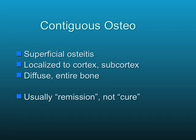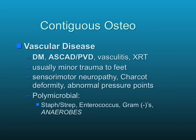The extent of contiguous osteo may be either superficial — involving only superficial membranes — or it can go deeper to involve the cortex, the subcortical bone, or the entire bone. When treating contiguous osteomyelitis, I usually talk about it in terms of remission rather than cure, because there is always a likelihood of recurrence in the future, sometimes years down the line.